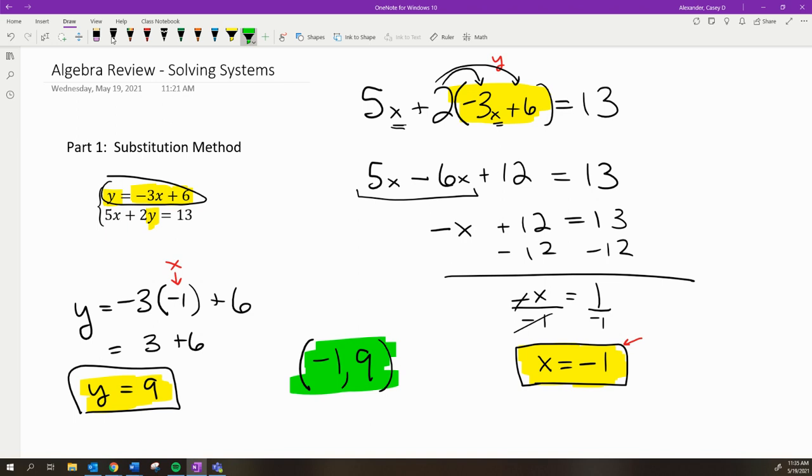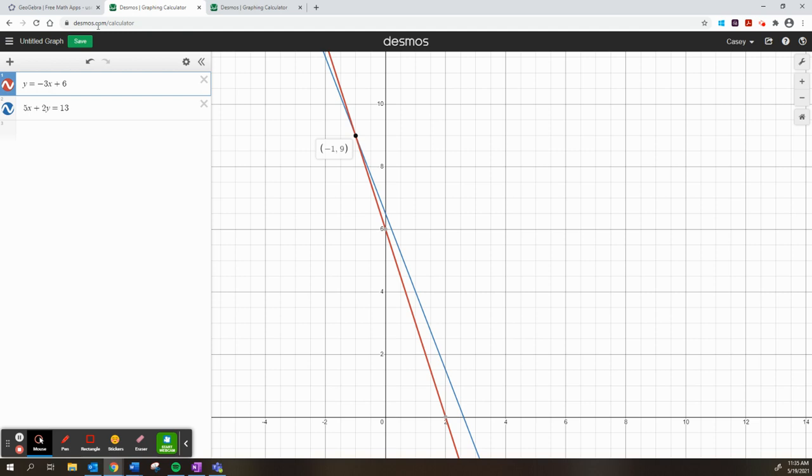That's my solution. You can always check your work using a graphing calculator. Here I have Desmos open, and graphing these two equations shows their point of intersection at -1,